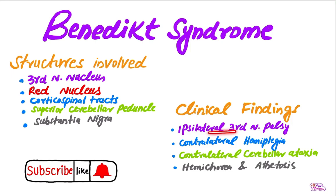There will be ipsilateral third nerve palsy — there will be a fixed dilated pupil, there will be ptosis, and there will be ophthalmoplegia. And there will be contralateral hemiplegia due to the involvement of the corticospinal tracts.